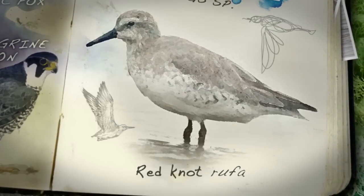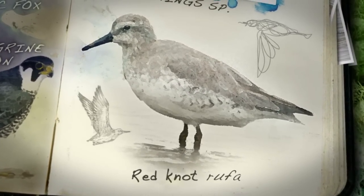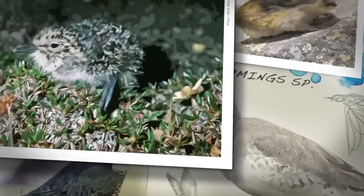To compensate for the decline of such primary prey as lemmings, some predators may turn to the Red Knot Rufa as a food source.